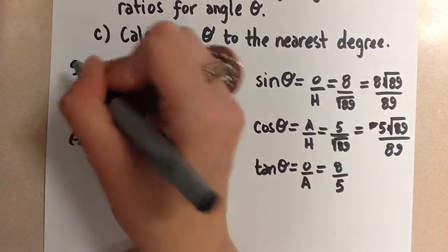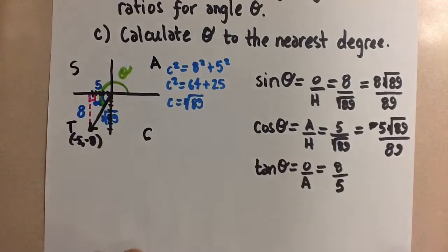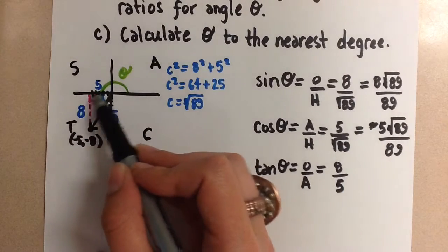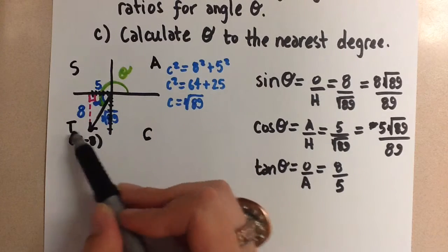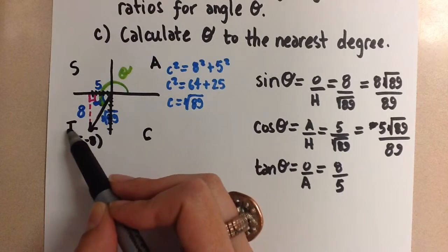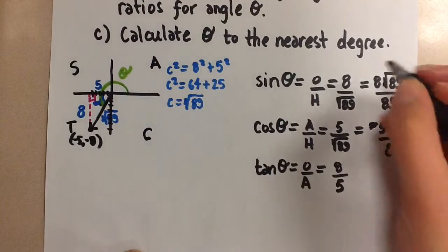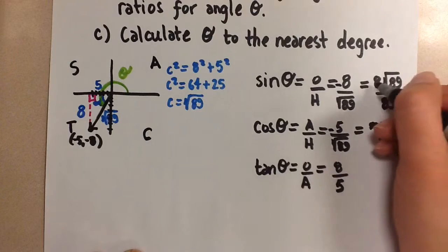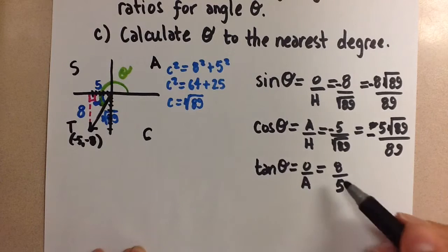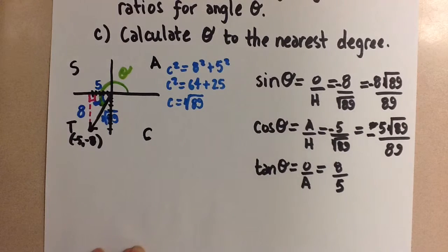Remember, the cast rule tells us which ratios are positive and negative. So for sine, in this third quadrant, only, sorry, sine is negative. The only one that's positive is the tangent ratio. So sine is negative and cosine is negative. So let's go back because that's really important to get our signs properly put in there. And tangent is positive, so we can leave it as is.